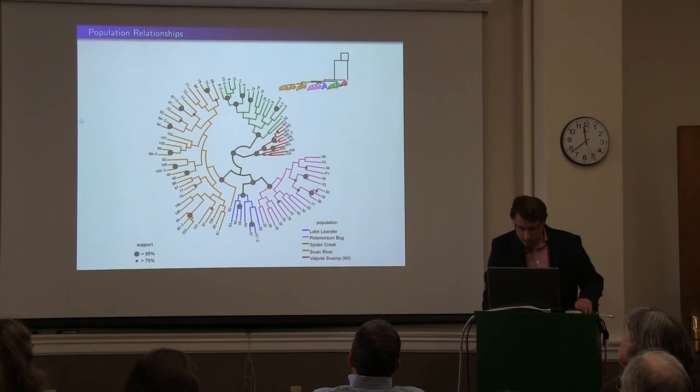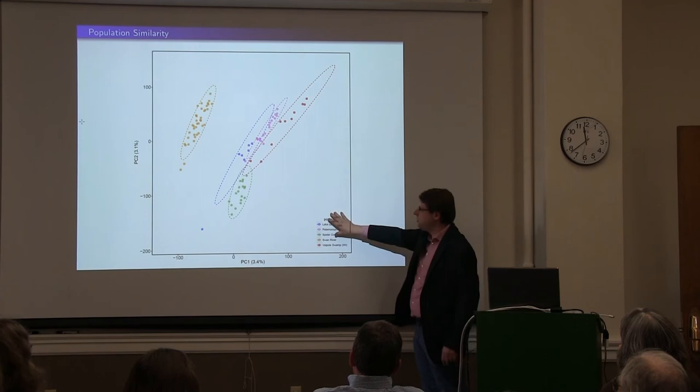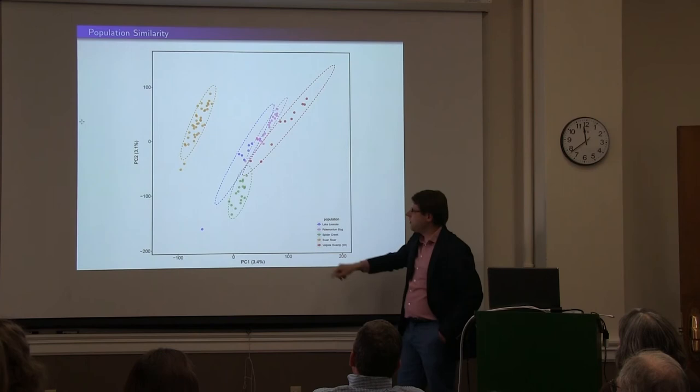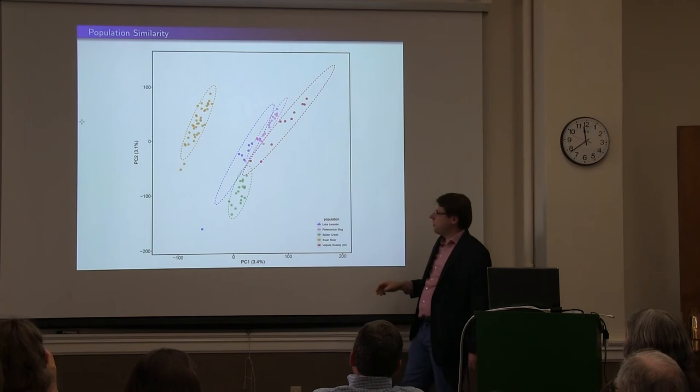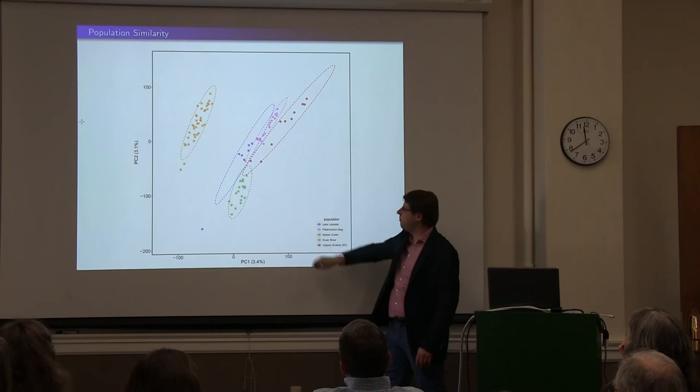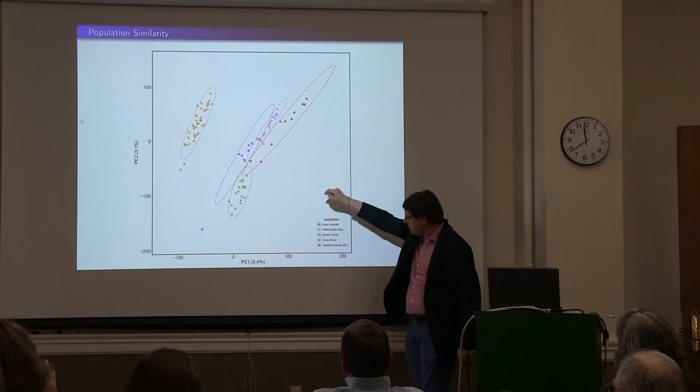There's another principal components analysis taking all our SNPs and doing data reduction. Based on the first principal component, we have the Swan River population in southeastern Minnesota separating out from all our other populations. If we look at principal component two, the Spider Creek population in southwestern Minnesota separates out from the remainder. Principal component three separated out the Wisconsin population. And essentially, the two northern Minnesota populations are very, very similar to each other.